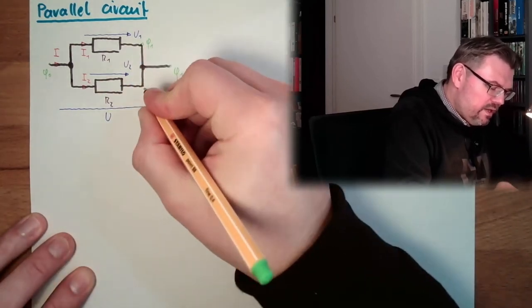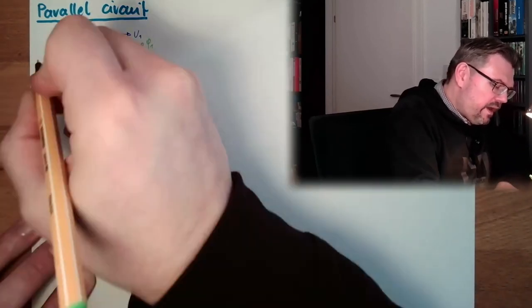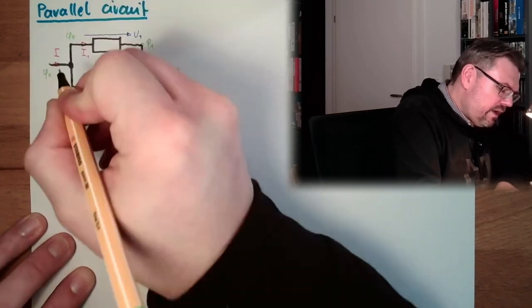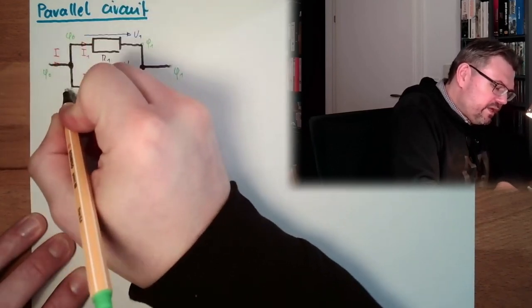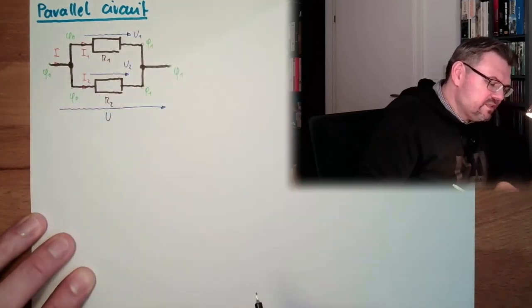So what potential do we have here? We have here V1, here we also have V1, and here we have V0, and here we also have V0. Because the potentials of these whole connections are the same.